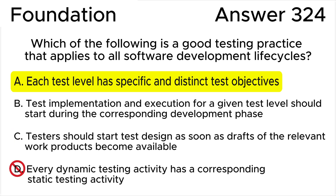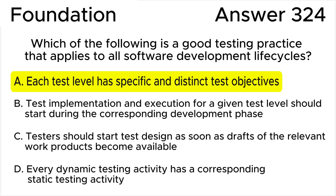Answer D is wrong because quality control applies to all development activities, meaning every software development activity has a corresponding test activity. However, the same symmetry does not apply to dynamic and static testing. There are some static testing activities — for example, static analysis — for which there is no obvious corresponding dynamic testing activity.